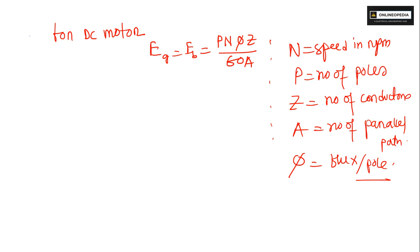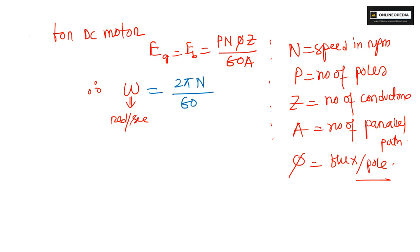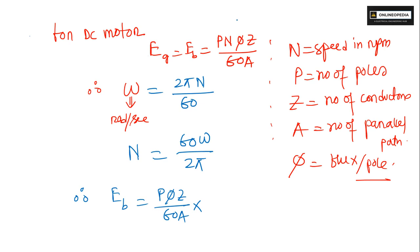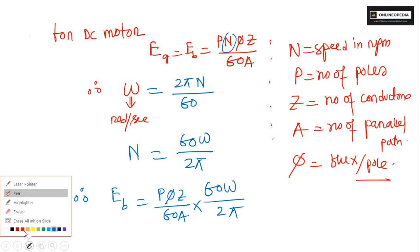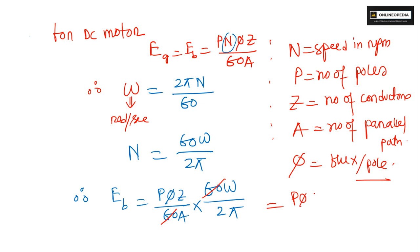Back EMF is P·phi·N·Z divided by 60A. Since omega (speed in radians per second) equals 2·pi·N divided by 60, we can write N as 60·omega divided by 2·pi. Substituting into the Eb equation and cancelling 60, we get Eb equals P·phi·Z·omega divided by 2·pi·A.